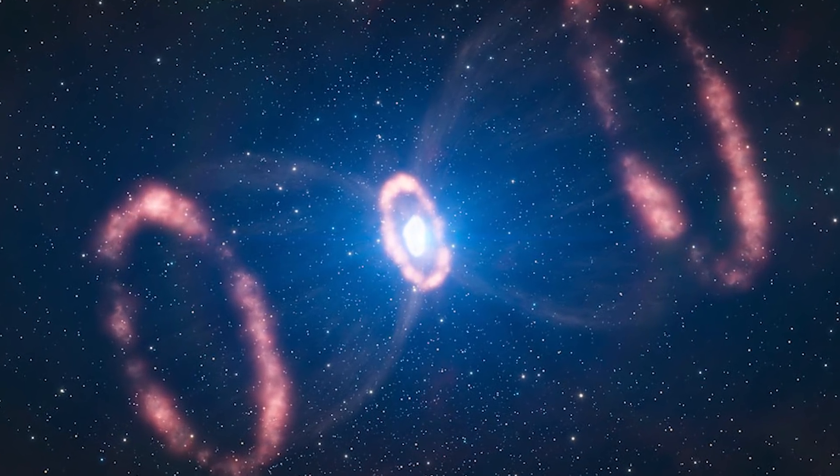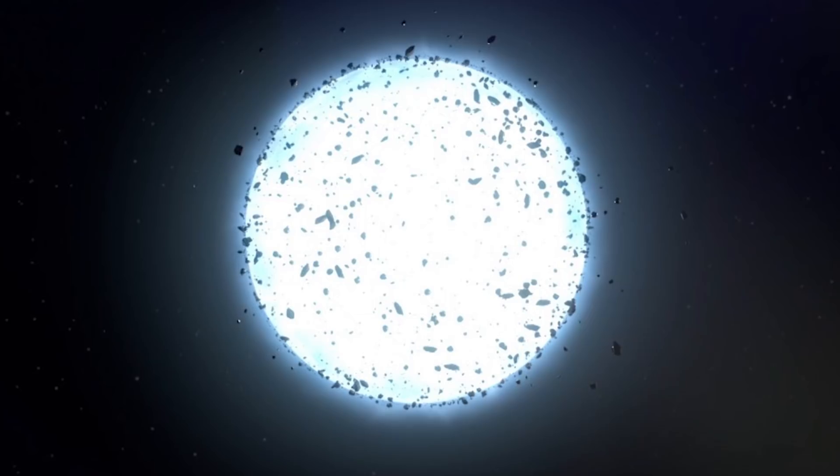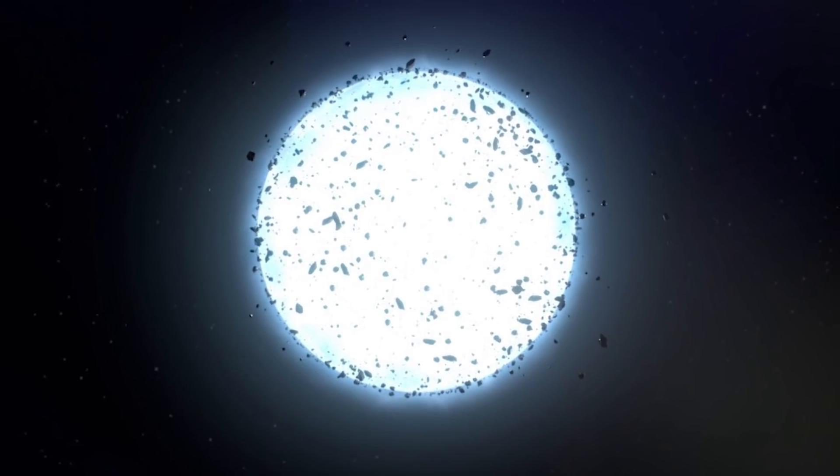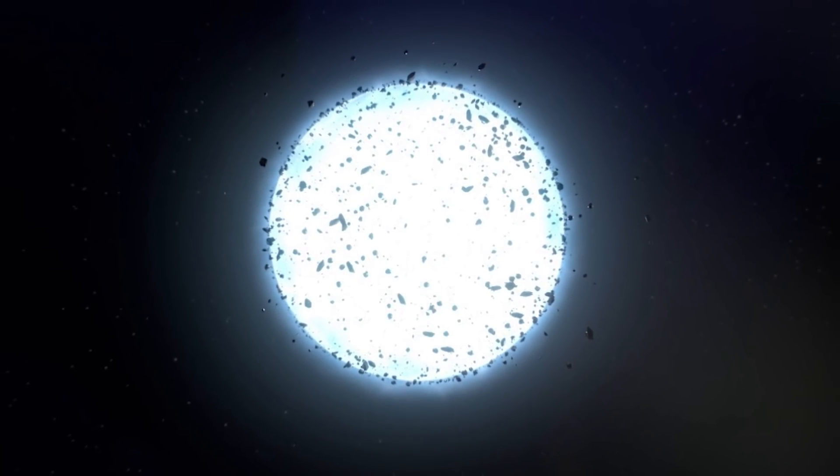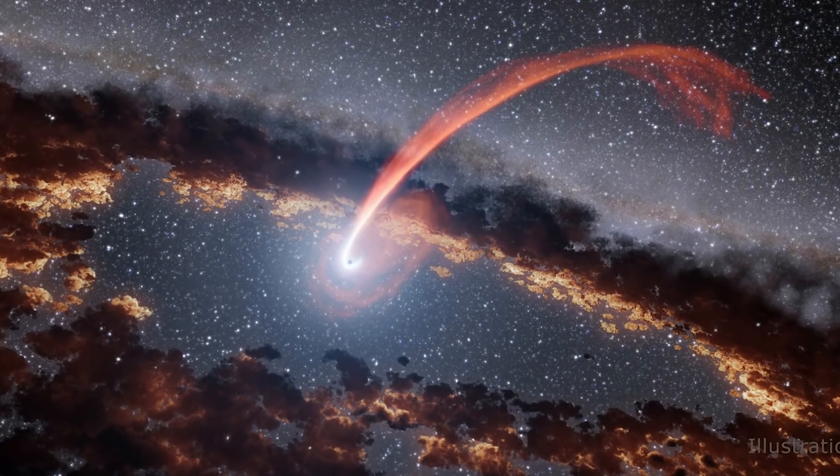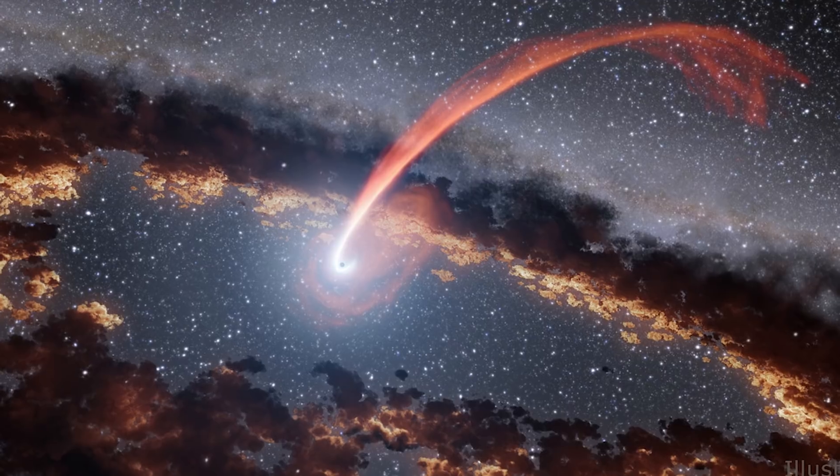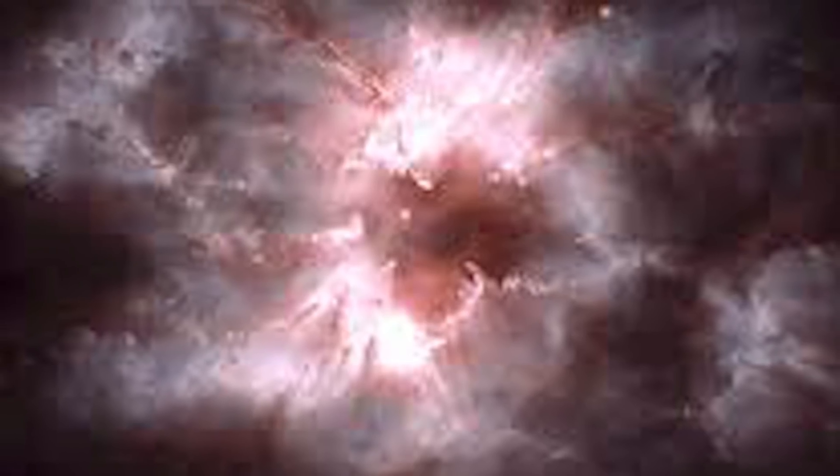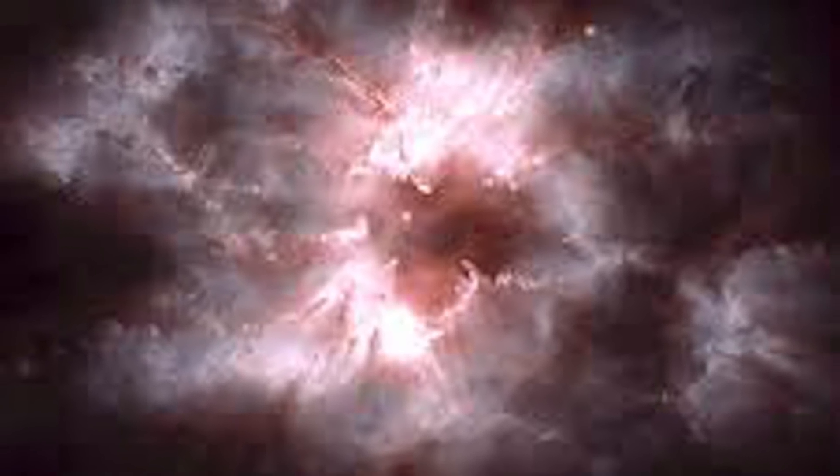The second way a supernova can happen is when a star is about to die. When a star is at the end of its life, there is no more nuclear fuel to burn, so some of its mass flows into its own core. This causes the core to be so heavy it can't handle the gravity, so it collapses. As a result, the collapsing star implodes and becomes a supernova.